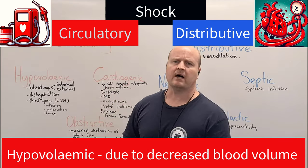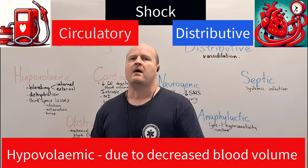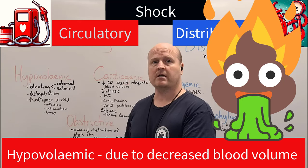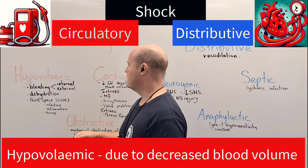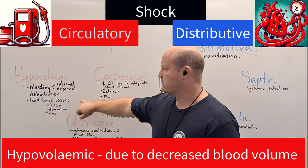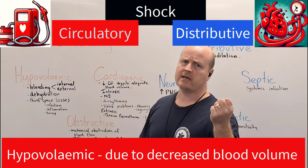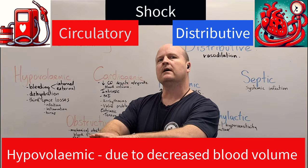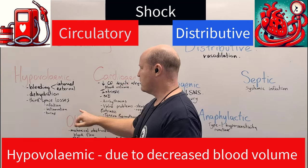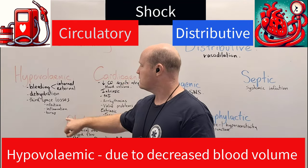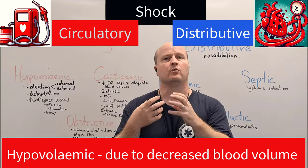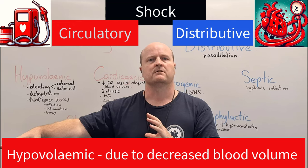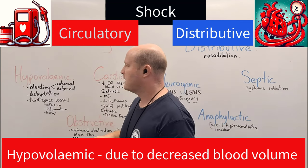Other causes of hypovolemic shock include dehydration. If we have chronic vomiting or diarrhea, we'll get dehydrated and lose blood volume. We can also have third space losses — fluid that is not in our cells and not in our blood, but has leaked out into the third space. Infection, massive inflammation, or burns can all cause fluid to leave circulation and the cells, causing hypovolemic shock.